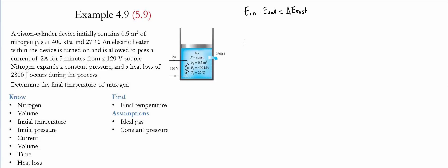The amount of energy in is the electrical work provided by the electrical heater. The amount of energy out is the heat leaving the system plus the boundary work done by the system.